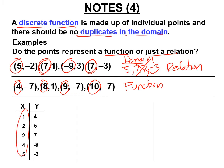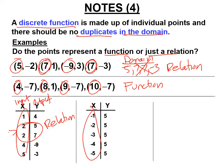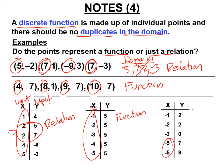Looking at another set: if there's an input of 2 with two different output values, one input is giving two outputs — so it's not a function, it's a discrete relation. But if there are no duplicates in the domain, even if the range has duplicates, it is a discrete function. Duplicates in the range are totally fine.